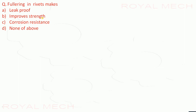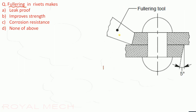Fuller ring in rivets makes them: leak proof; improves strength; provides corrosion resistance; or none of the above. Looking at what a fuller ring is — we can see the fuller ring where we are producing a certain angle between the plates. With this fuller ring, the riveted joint will be leak proof. So option A is the correct option.